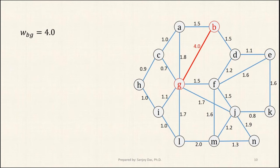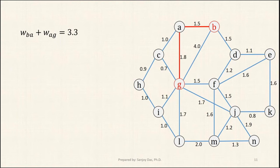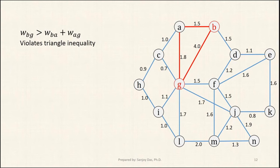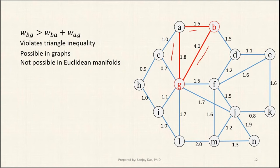Note that the weight between B and G is 4.0 in this general graph, while the distance from A to G plus B to A is 3.3. So W_BG = 4.0 exceeds 1.5 + 1.8 = 3.3. This is possible in a general graph, but we won't deal with such situations in Euclidean manifolds, because for us the triangle inequality must hold. The distance between B and G can never exceed 1.5 + 1.8; it must always be less than 3.3.